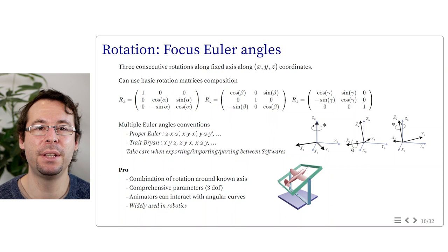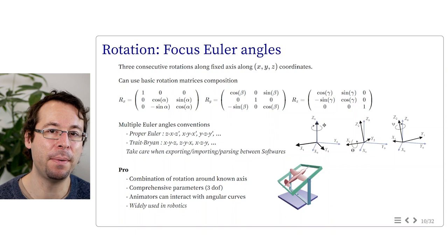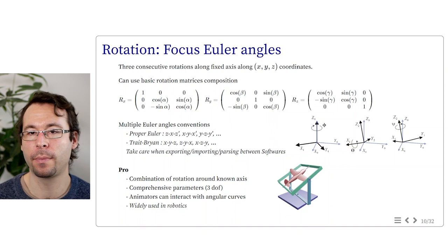Euler angles have some advantages. They represent a series of rotations around known axes, so the angle arguments are comprehensive from a human point of view. This is why Euler angles are often proposed in 3D modeling and animator interfaces. Animators are familiar with interacting with angular curves, and Euler angle conventions are also commonly found in robotics.